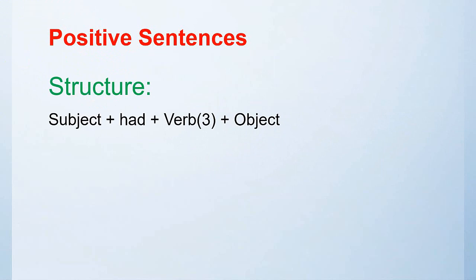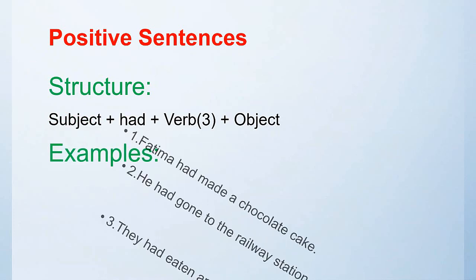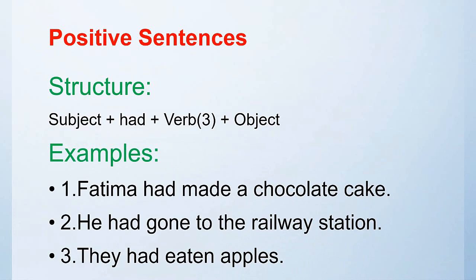Let's look at the structure: subject plus had plus verb third form plus object. Now let's look at the examples. Fatima had made a chocolate cake. He had gone to the railway station. They had eaten apples.